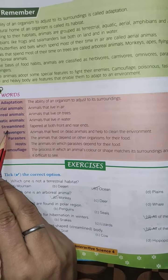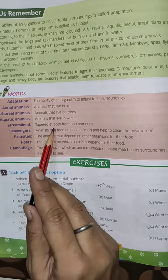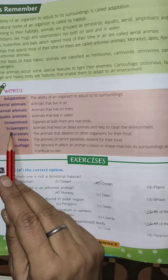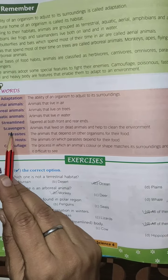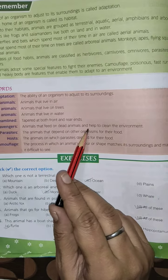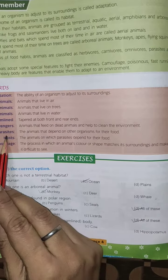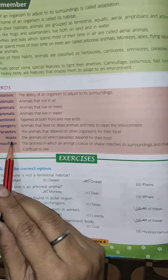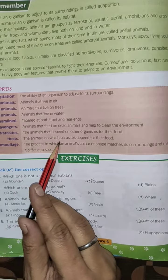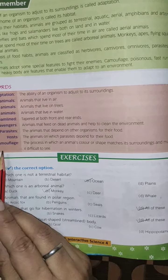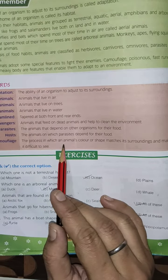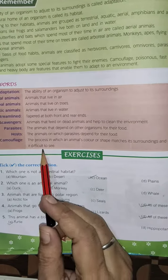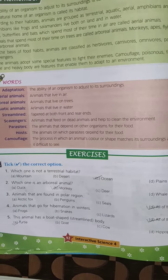Streamlined: light that is trapped at both front or rear ends. Scavengers: animals that feed on dead animals and help to clean the environment. Parasites: animals that depend on other organisms for their food. Host: the animal on which parasites depend for their food. Camouflage: the process in which an animal's color or shape matches its surroundings, making it difficult to see.